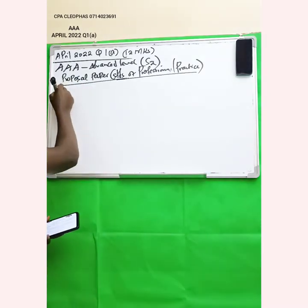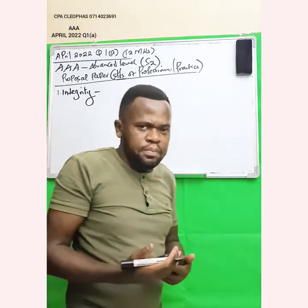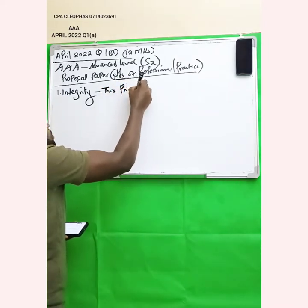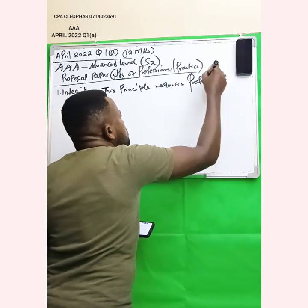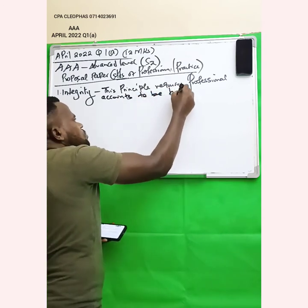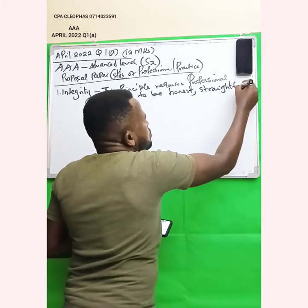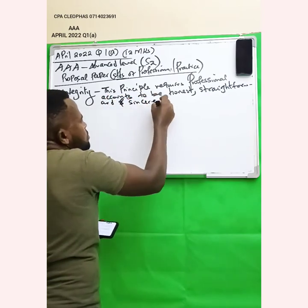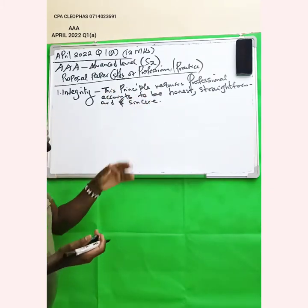The first standard from the code of ethics is integrity. When explaining this principle, you need to say: this principle requires professional accountants to be honest and straightforward. That is the first standard of professional practice.